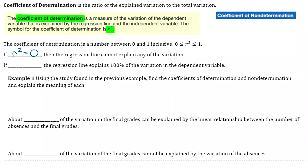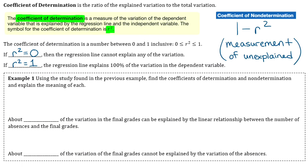If r squared equals zero, that tells you the regression line cannot explain any of the variation. If r squared equals one, the regression line explains 100% of the variation in the dependent variable. Usually r squared will be somewhere in between. We also have the coefficient of non-determination, found by doing one minus r squared, which tells you the variation that cannot be explained by the variation of the dependent variable.